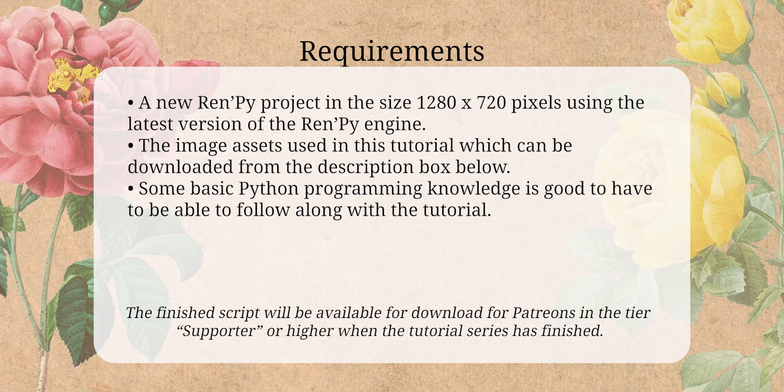In order to follow along with this tutorial, you're going to need to prepare a few things first. You're going to need a new Vampy project in the size 1280x720 pixels using the latest version of the Vampy engine. You are also going to need the image assets used in this tutorial, which you can download from the description box below. It is also good if you have at least some basic Python programming knowledge, which will make it easier to follow along with the coding. However, you may still find this tutorial interesting, useful, and educational either way. The finished script will be available for download for my patrons in the tier Supporter when the tutorial series has finished. With that said, let's go ahead and get started.